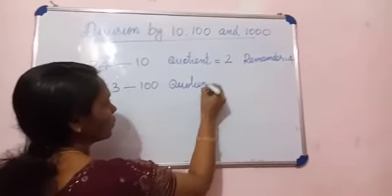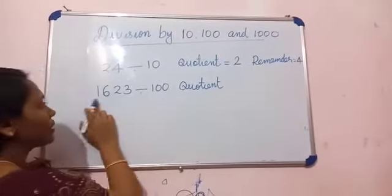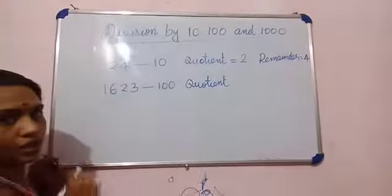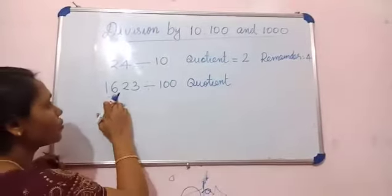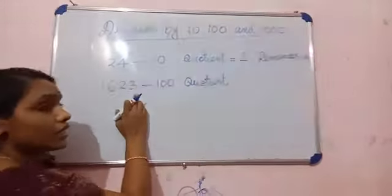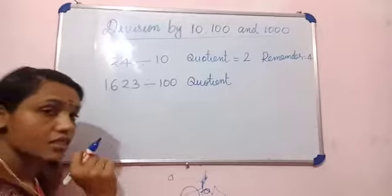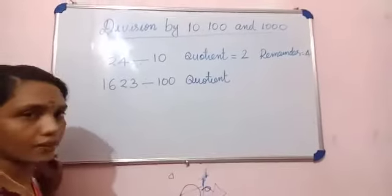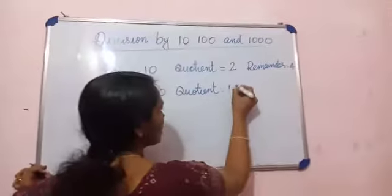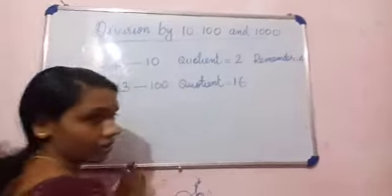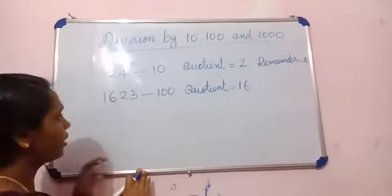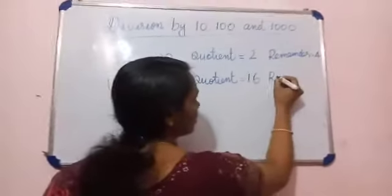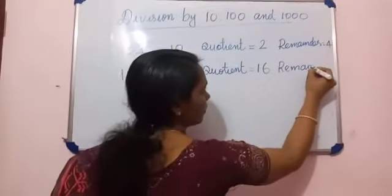The other digits of the dividend give the quotient. Here 1623 — there are sixteen 100s in 1600, so the quotient is 16. Then 23 is the remainder.